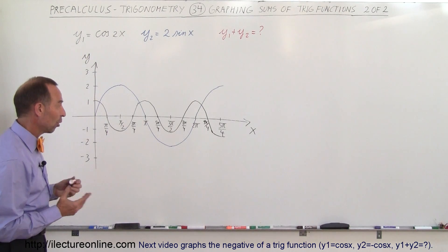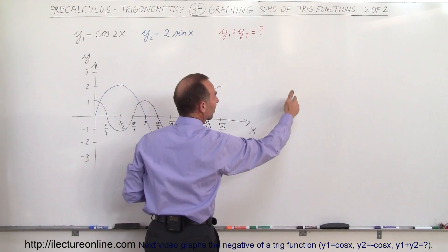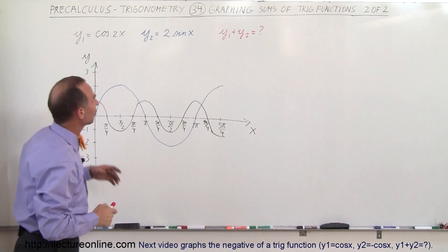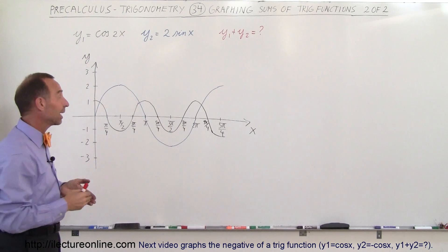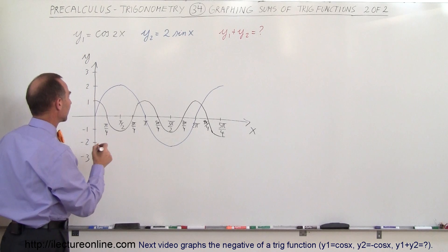Now we have to add those two together. So we can set up a table and set up a number of values for x, and for each value of x, we have a value for the cosine function, a value for the sine function, and we simply add them together. Or we can do it graphically, which is pretty easy to do if we just take our time doing it here.